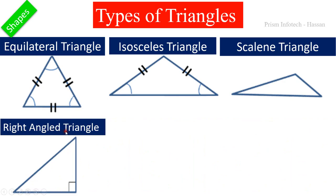This is a right-angled triangle. Because one of its angles is 90 degrees — that is a right angle — so it is called a right-angled triangle.